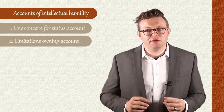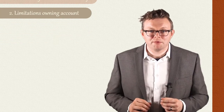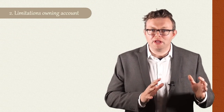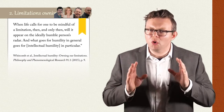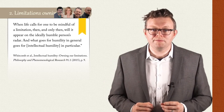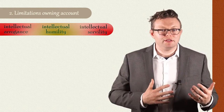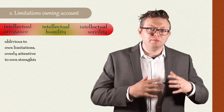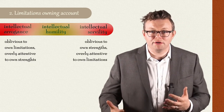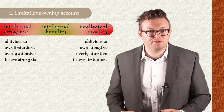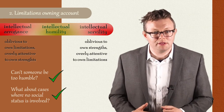Okay, so now we've tried to show what the low concern for status view is, and a couple of worries we might have against it. So let's consider the limitations-owning account now, and see how it matters. According to this view, intellectual humility is a proper attentiveness to and owning of one's intellectual limitations. As Dennis Whitcomb and others have summarized, when life calls for one to be mindful of a limitation, then and only then will it appear on the ideally humble person's radar. And what goes for humility in general goes for intellectual humility in particular. And thankfully, this means that intellectual humility isn't just the opposite of intellectual arrogance — it's a virtuous mean on this account. If you are completely oblivious to your limitations, then you're going to be intellectually arrogant, whereas if you're someone who is overly attentive to and owning of your intellectual limitations, then you're going to be intellectually servile — too humble, so to speak.